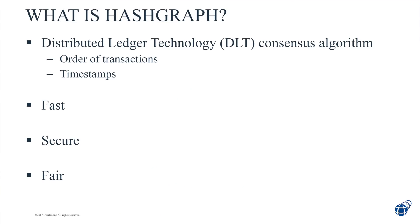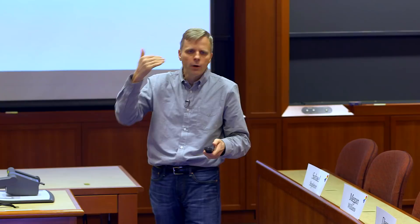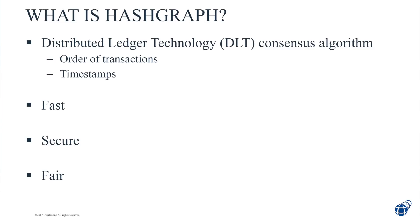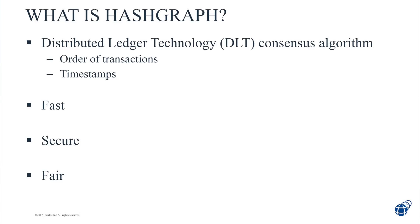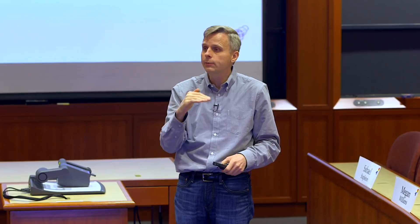A DLT allows us to come to an agreement — a consensus — on the order of our transactions. We're all creating transactions that change our shared data, and we come to a consensus on what order those transactions are in. We also come to a consensus on a timestamp for each transaction, so we all agree on the time at which it officially occurred. In Hashgraph, it's actually going to be a good timestamp that the whole community contributed to.